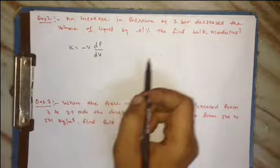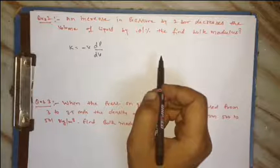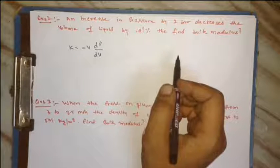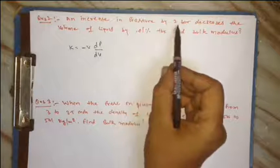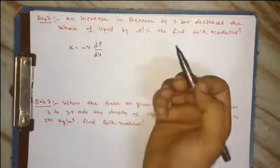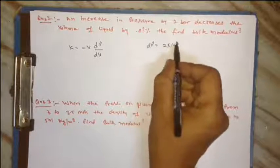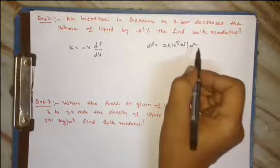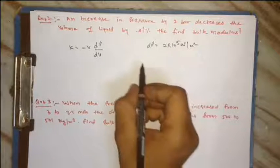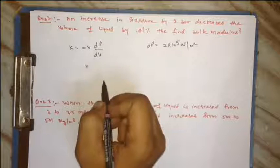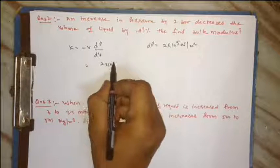Minus will be compensated, dP is equal to 2 bar. 1 bar is equal to 10 to the power 5 newton per meter square. Putting the value: 2 into 10 to the power 5.